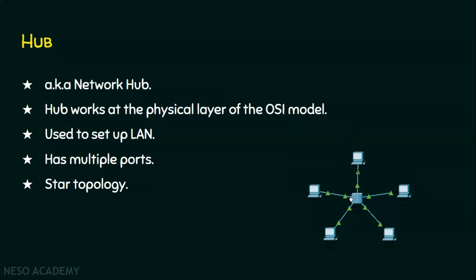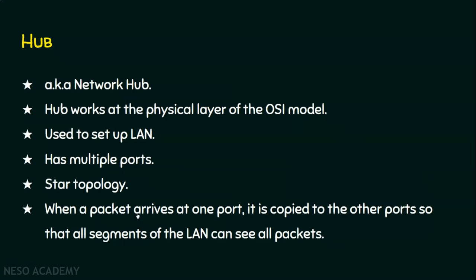The working principle of a hub: when a packet arrives at one port, it is copied to all other ports so that all segments of the LAN can see all packets. For example, if there are 10 ports in a hub and a computer sends a packet on one port, that data is copied to all the remaining 9 ports. We will now see the working of the hub to make this clearer.